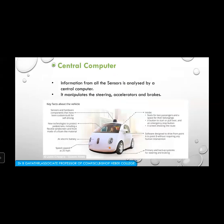The hardware includes custom-built self-driving sensors and new technologies to protect pedestrians, including a flexible windscreen and a foam-like front. An electric battery is used and the speed is capped at 25 miles per hour. There is a primary backup system for steering and braking. The software drives from point A to point B without human intervention, with seats for two passengers, a start/pull-over button, an emergency stop button, and a screen showing the route.